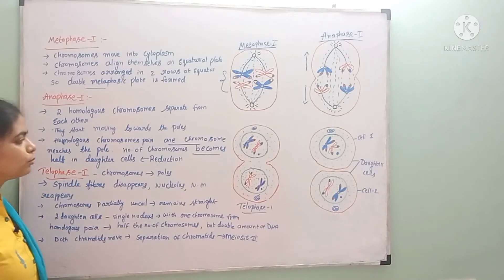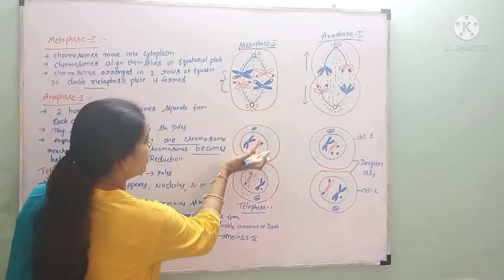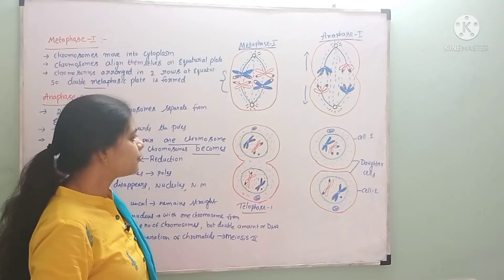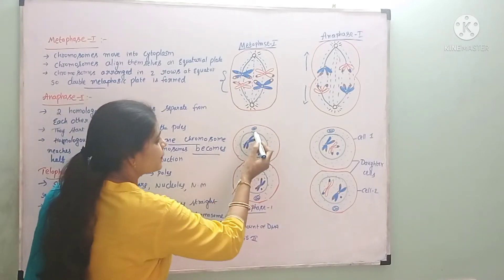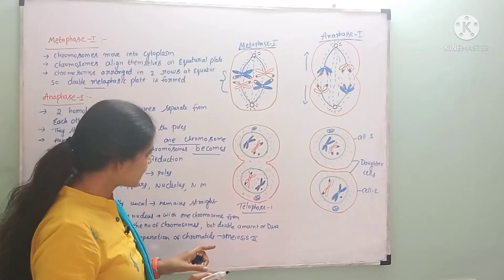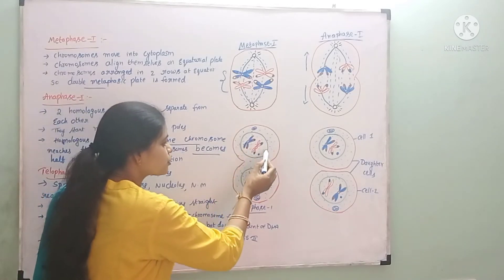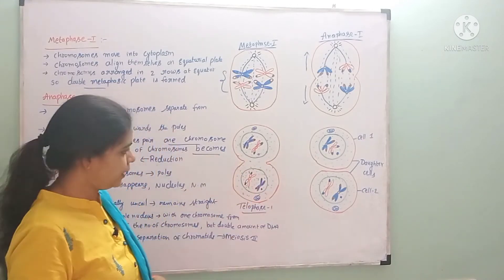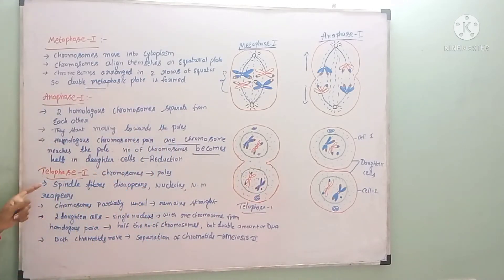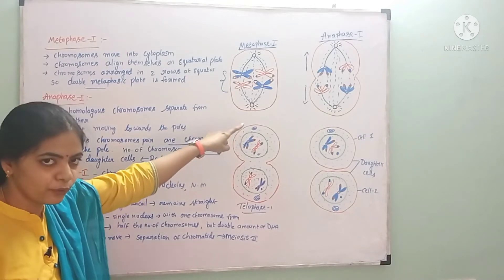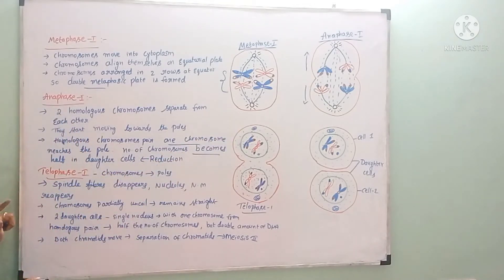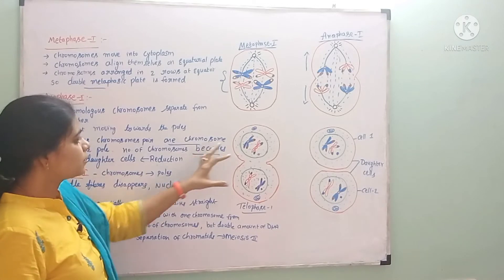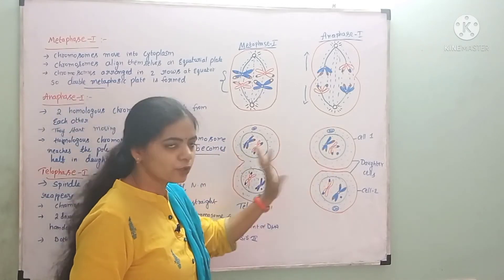In telophase 1, the chromosomes complete their movement to the poles. Spindle fibers completely disappear. Then the nuclear membrane reappears around the chromosomes at each pole, and the nucleus reappears. So in telophase 1: chromosomes move to the poles, spindle fibers disappear, and the nuclear membrane reappears.